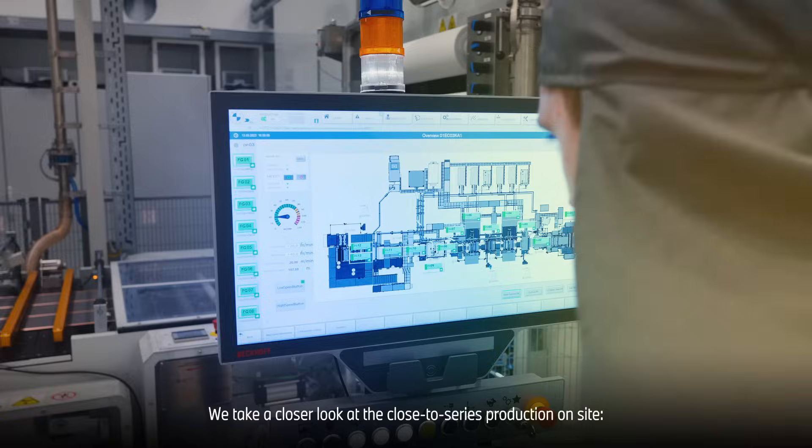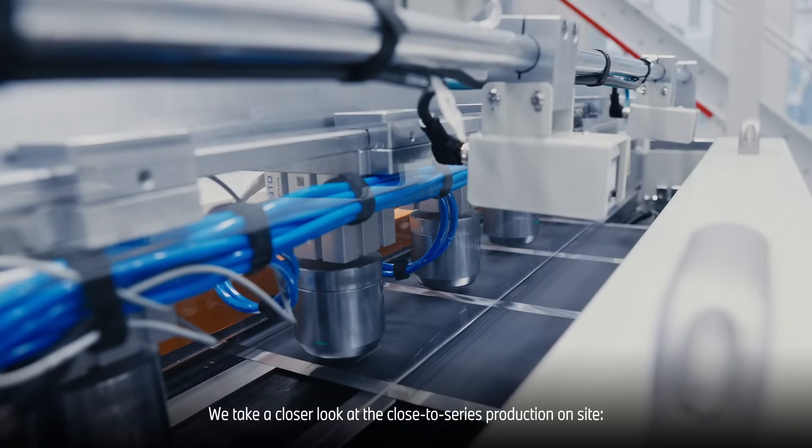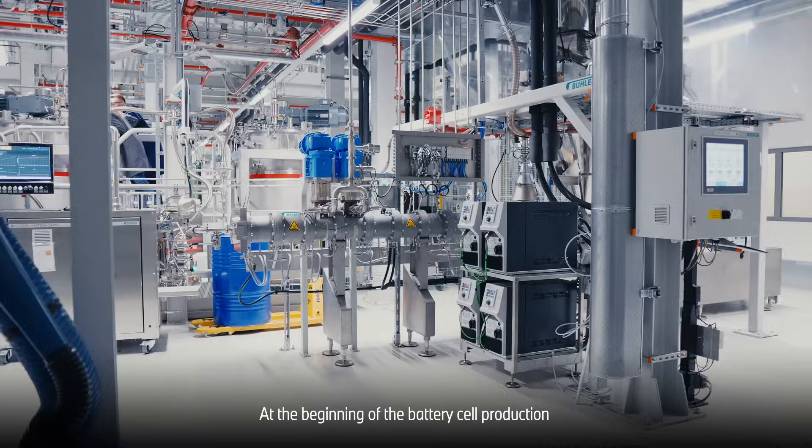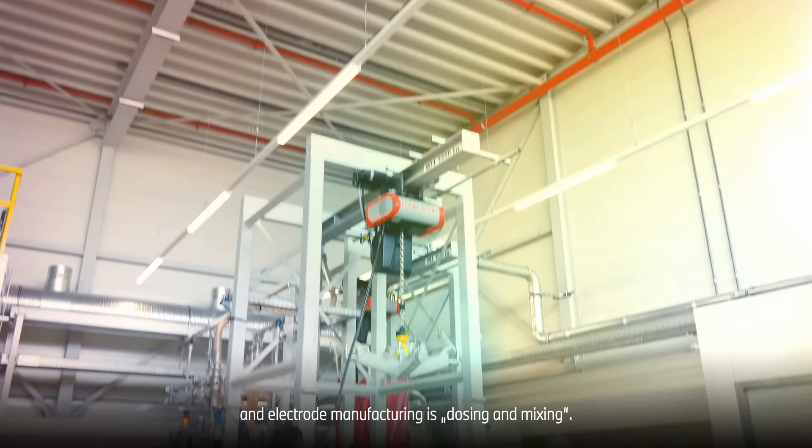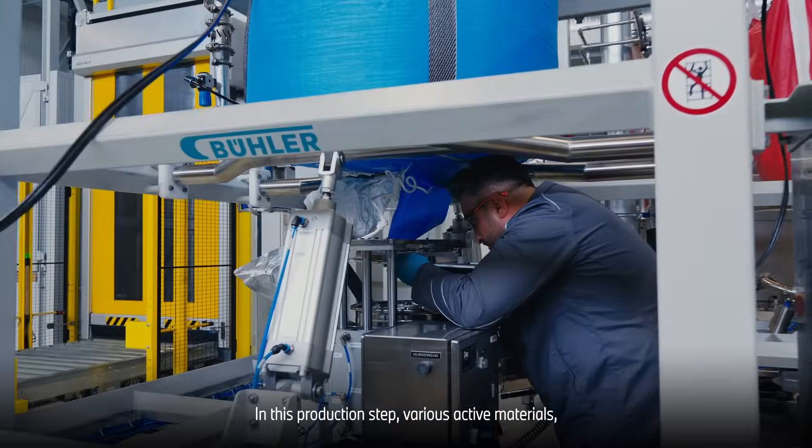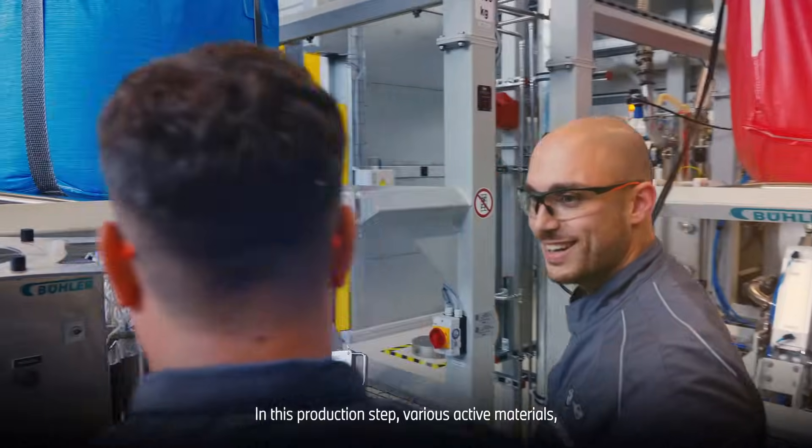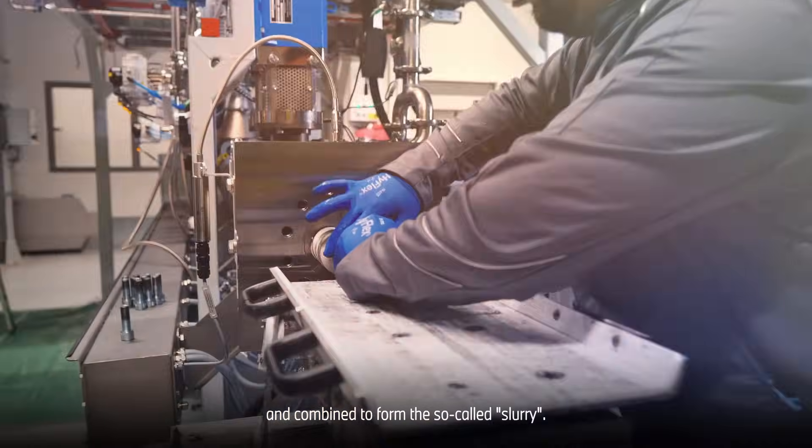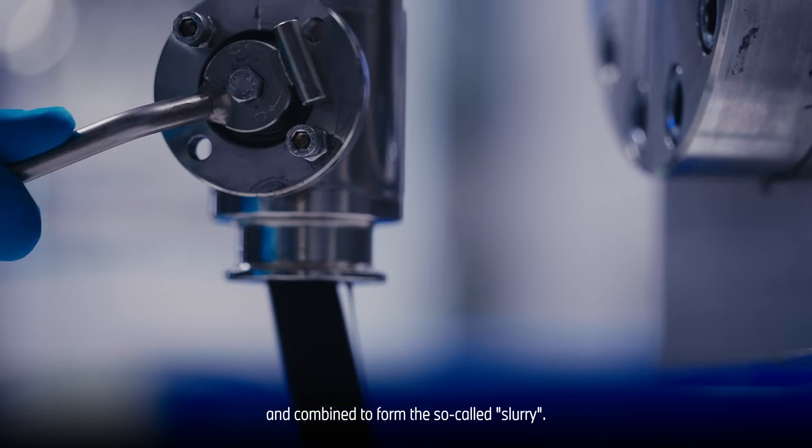We take a closer look at the close-to-series production on site. At the beginning of the battery cell production and electrode manufacturing is dosing and mixing. In this production step, various active materials, solvents, and binders are mixed together and combined to form the so-called slurry.